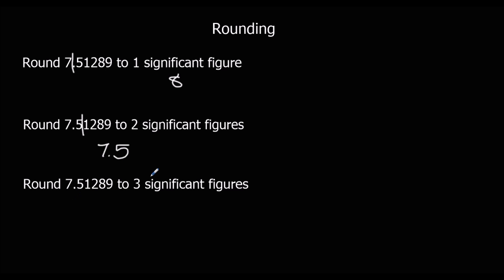And three significant figures from the first non-zero number: 1, 2, 3. The next number is a 2. That's not going to round it up to 7.52. So it stays 7.51.